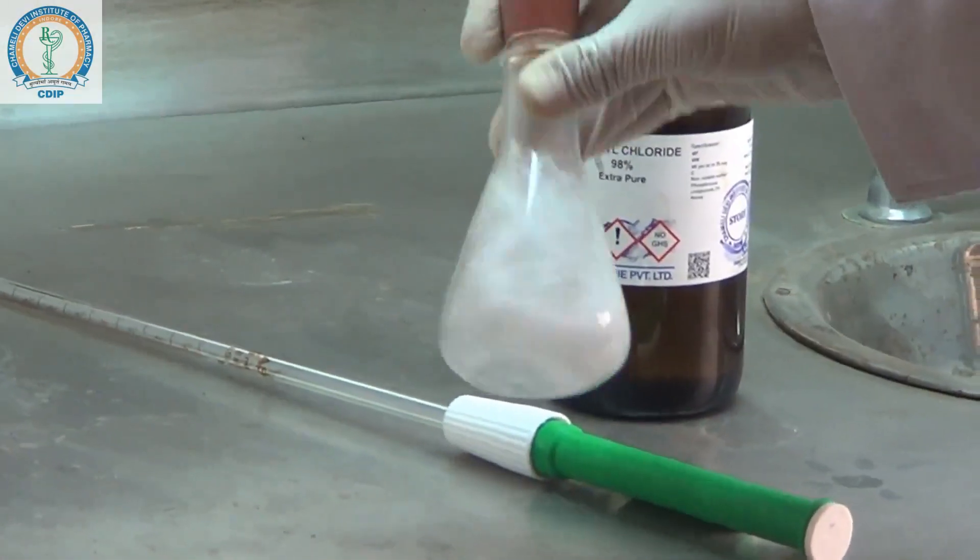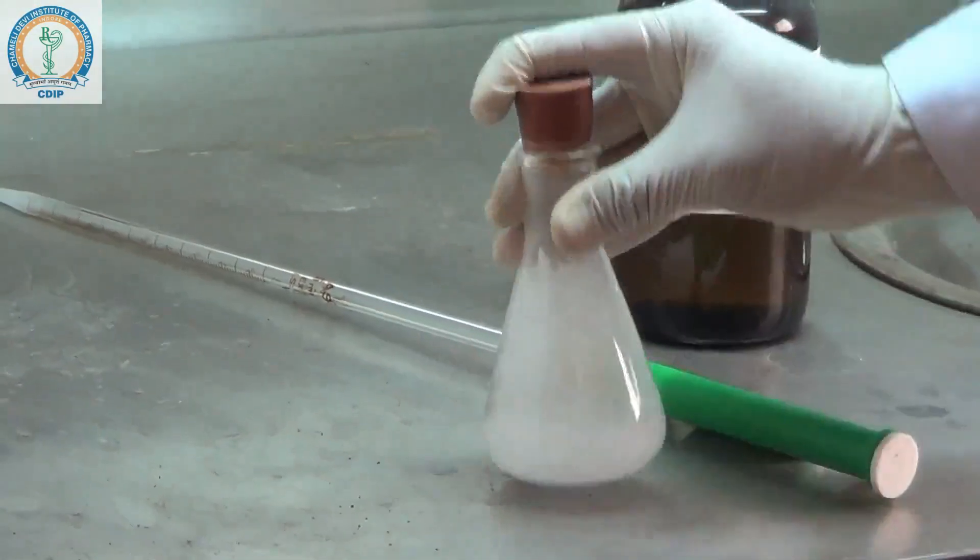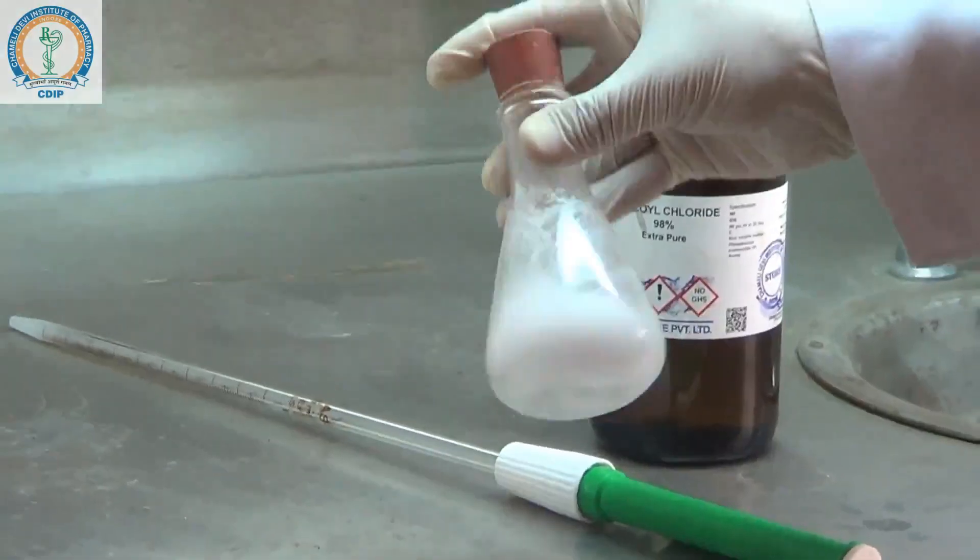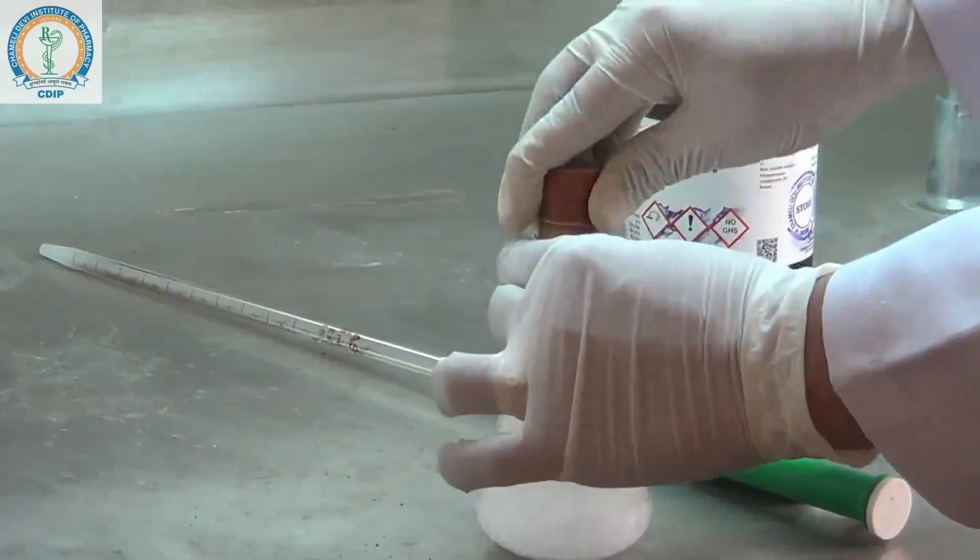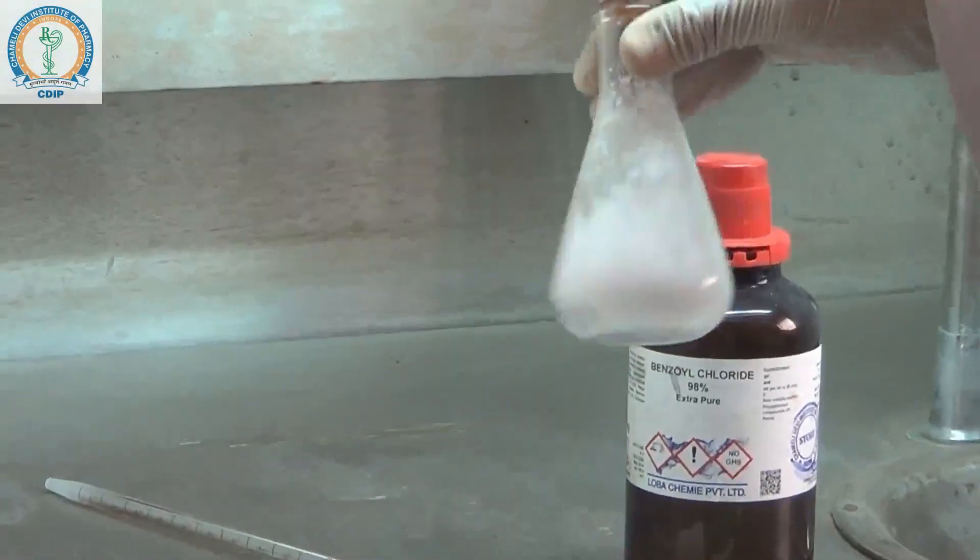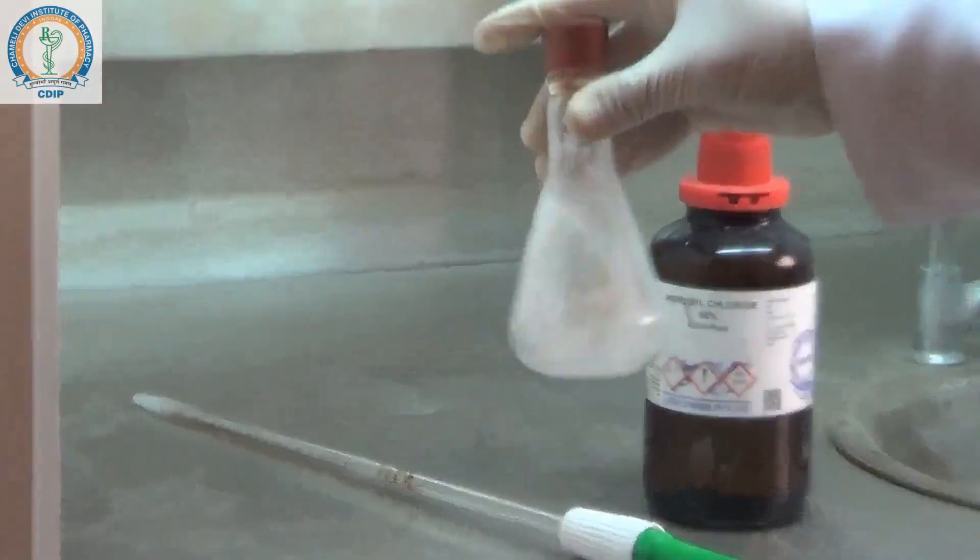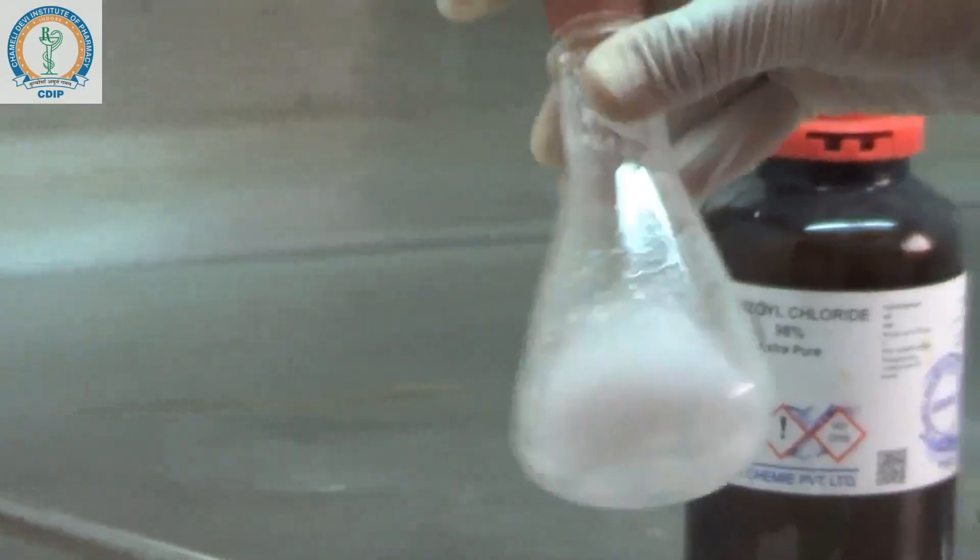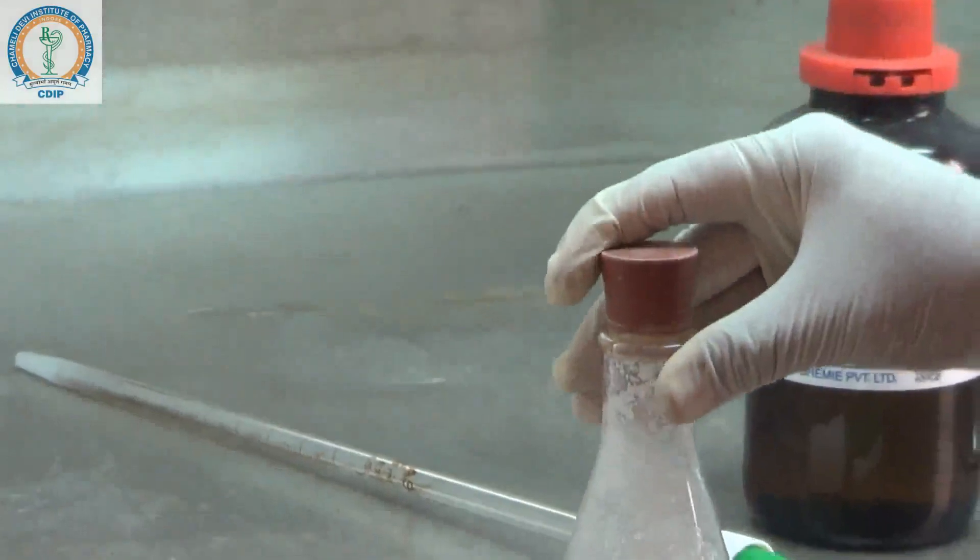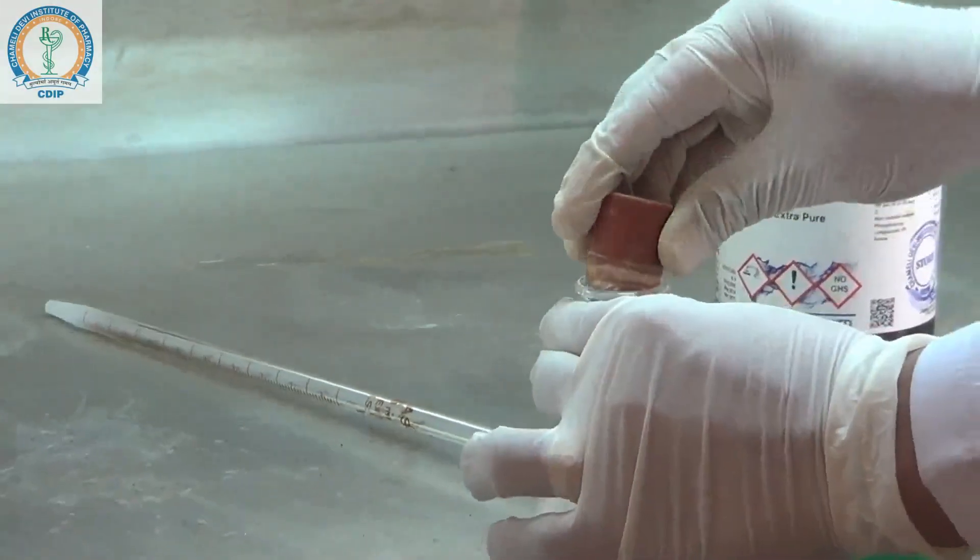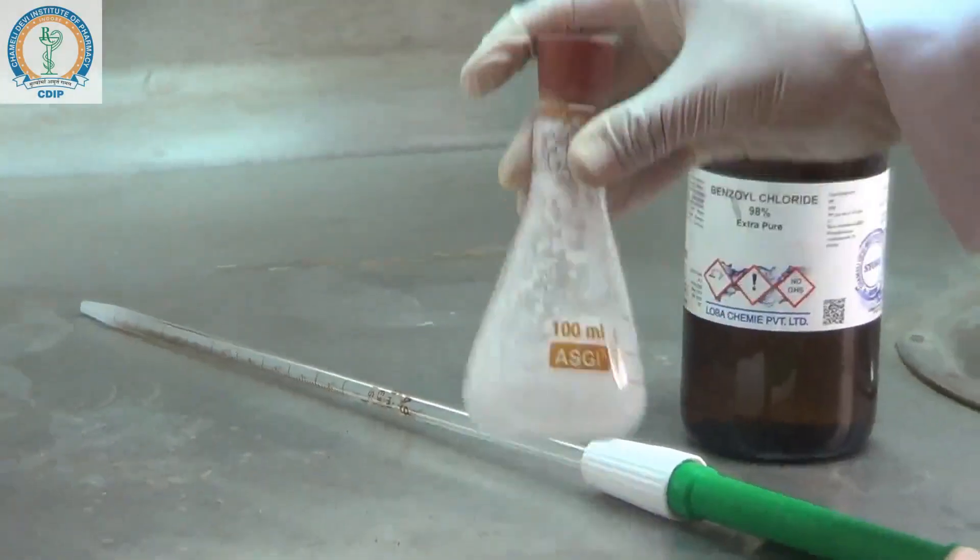Shake it vigorously like this, and you have to open the cork periodically so that the pressure generated inside should be released. You should release pressure like this, and then again rotate. You can see the product is precipitated out. You have to shake it for 15 minutes in the same manner.